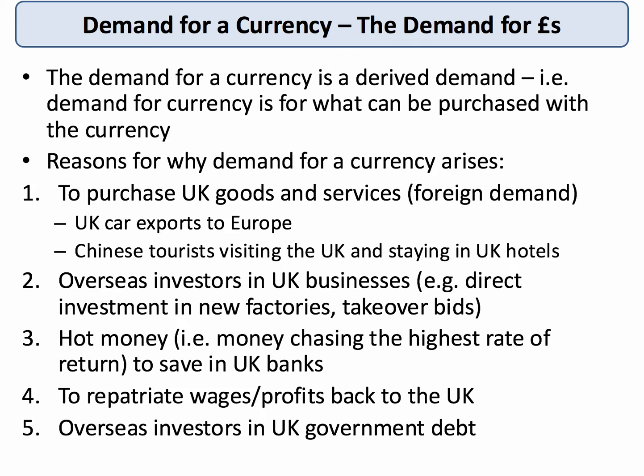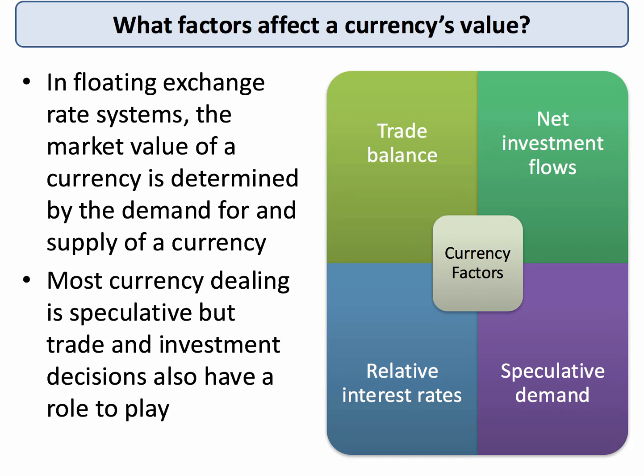Demand comes from trade, from investment, and from speculation. The supply of pounds is basically just the reverse: supply of pounds comes from imports, outflows of investment, and speculative selling. Britain operates a floating exchange rate system, and the key point is that in a floating system the market value of a currency is determined purely by the demand for and supply of that currency.